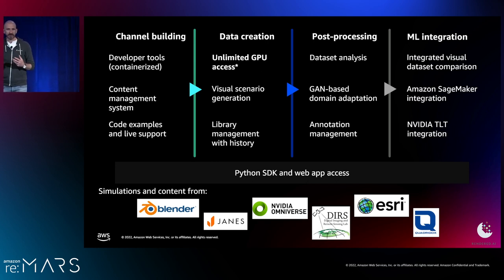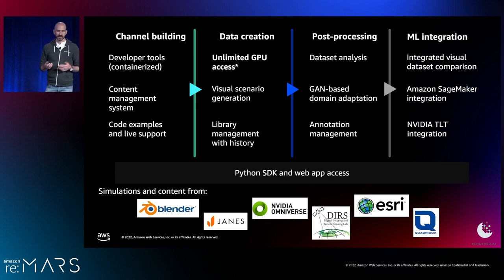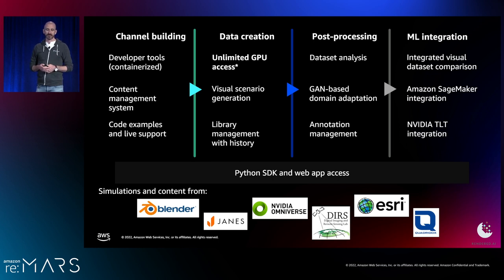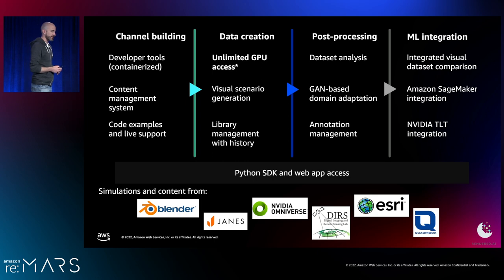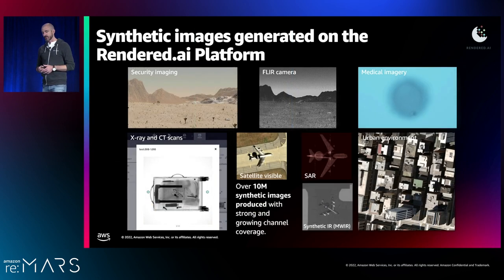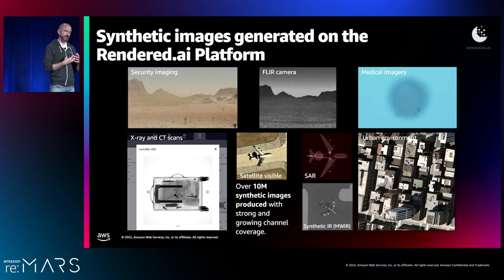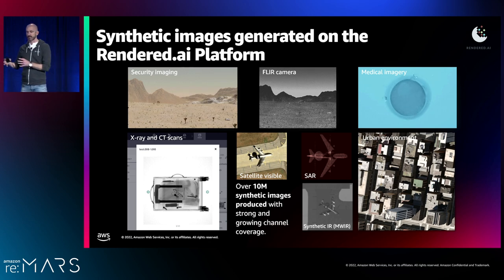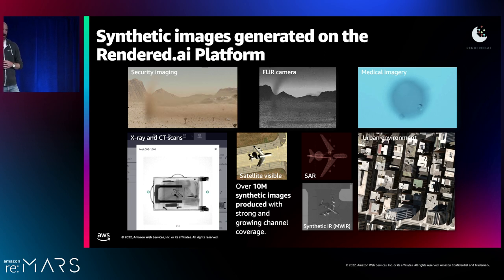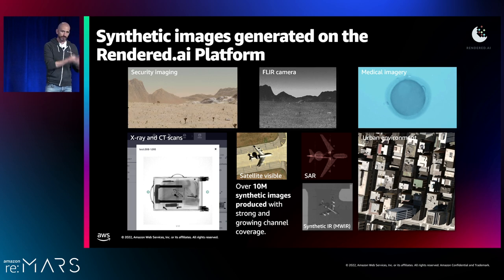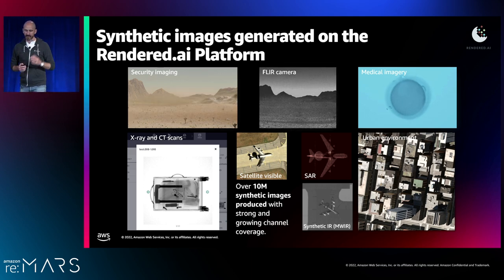We've been building a lot of content onto our platform over the last couple of years. That includes open source tools like Blender, but also partners like Jane's, NVIDIA Omniverse, Deersig — a relatively small organization but does some of the best hyperspectral simulations in the world — Quadradox, which does some of the best X-ray simulations in the world, and Esri, one of the largest geospatial information systems providers. By bringing all of these tools together we get a wide variety of capabilities deployable using the same underlying infrastructure, extending from overhead imagery and its varieties to X-ray to medical applications.